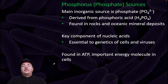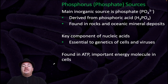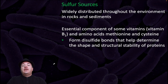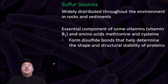The main inorganic source of phosphorus is phosphate, which can be derived from phosphoric acid and is found in rocks and ocean mineral deposits. Phosphorus is a key component of nucleic acids, so it's essential to the genetics of cells and viruses. It's also found in ATP, the important energy molecule in cells. Sulfur is widely distributed throughout the environment in rocks and sediments. It is an essential component of some vitamins, for example vitamin B1, and amino acids methionine and cysteine. The sulfur in these amino acids helps form disulfide bonds that determine the shape and structural stability of proteins.